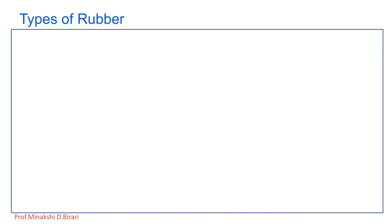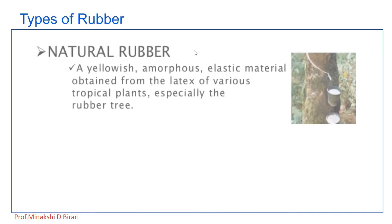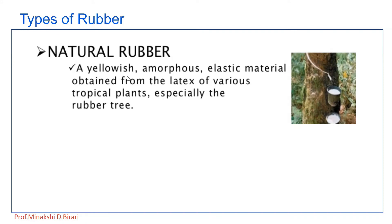Now, what are the types of rubber? The first type is natural rubber — a yellowish amorphous elastic material obtained from the latex of various tropical plants, especially the rubber tree. It is essentially the sap of rubber trees, which is the latex: a colloidal dispersion of rubber particles in water.